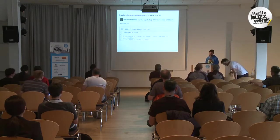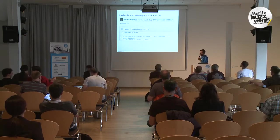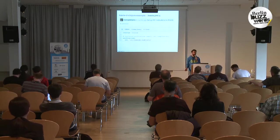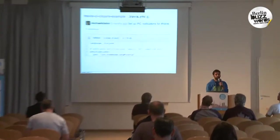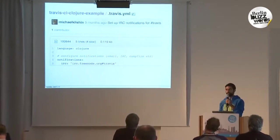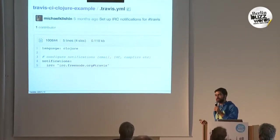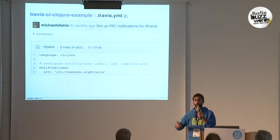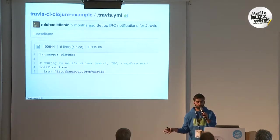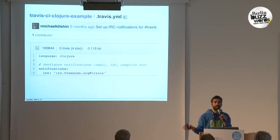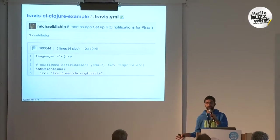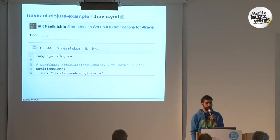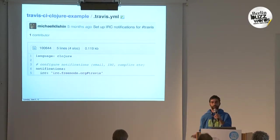Obviously, there are lots of continuous integration solutions already like Jenkins and so on. But what makes Travis so neat is that number one, it runs on the cloud — you're not your infrastructure, so it's somebody else's problem to run it, somebody else's problem to scale it. But most importantly, it's super easy to use.